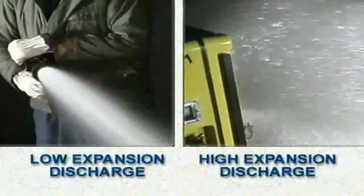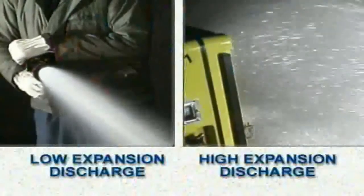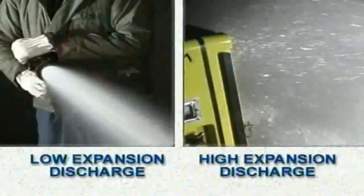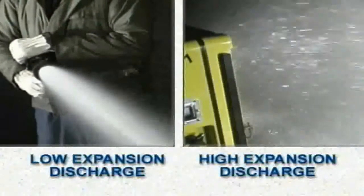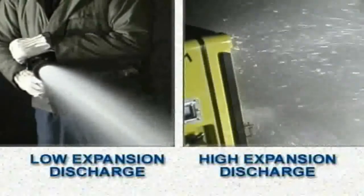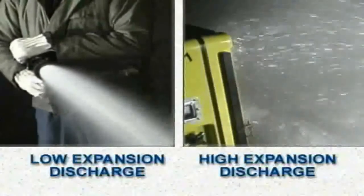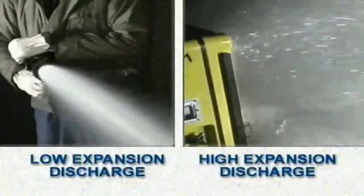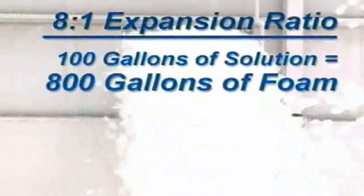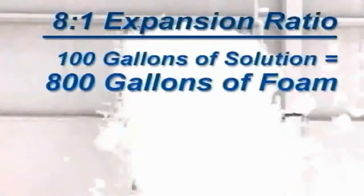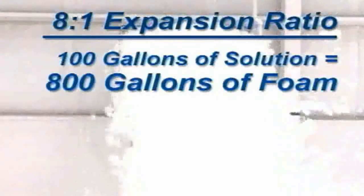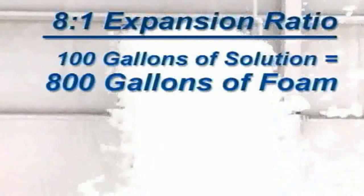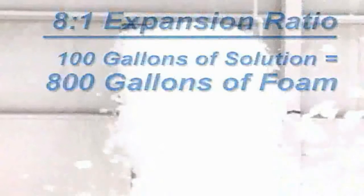Essentially, the difference between high and low expansion foam is defined by expansion ratio, which simply indicates the amount of foam solution needed to generate a volume of finished foam. For example, an 8 to 1 expansion ratio means that 100 gallons of foam water solution can produce up to 800 gallons of finished foam.